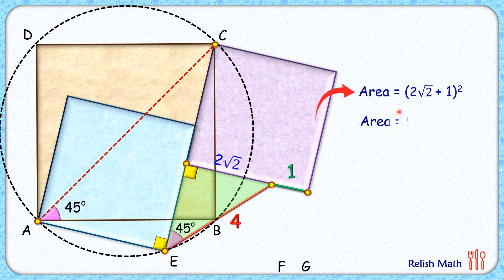This area is 9 + 4√2 square centimeters. On simplifying, we get this area as 14.66 square centimeters, and that's our answer. I hope you enjoyed the solution. I will see you in the next video. Till then, tata, bye bye.